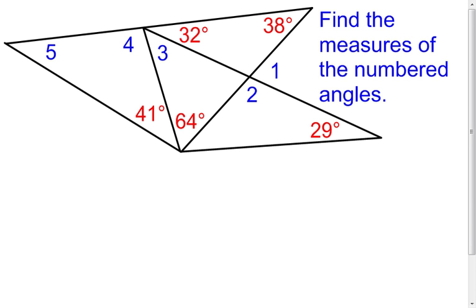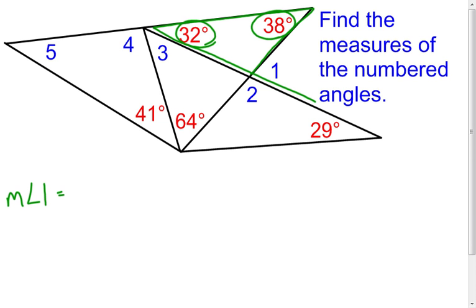I'm going to find the measure of angle 1 first. I'm going to highlight just the triangle I want to work with, and I'm noticing that angle 1 can be an exterior angle of that triangle. The exterior angle theorem tells us that if I add the measures of the remote interior angles together, I will find the measure of that exterior angle. So I'm going to take the 32 degree angle and the 38 degree angle, add them together, and I end up with 70 degrees for the measure of angle 1.